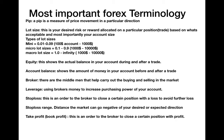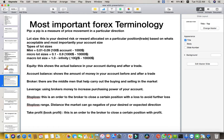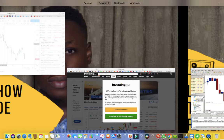Equity shows the actual balance in your trading account during and after a trade. Your account balance shows the money you deposited — for example, $100,000. Equity is what changes when you have placed a trade, either adding or subtracting. The equity is the difference between your deposited balance and your current position's running profit or loss.